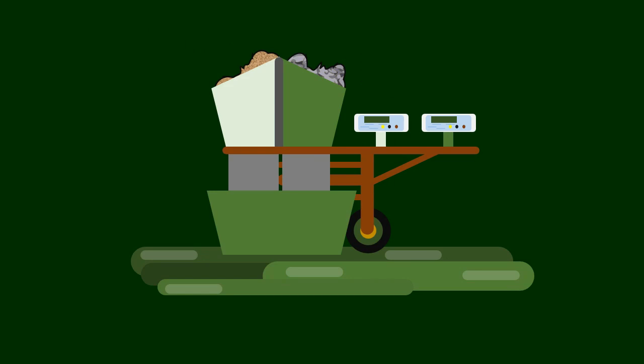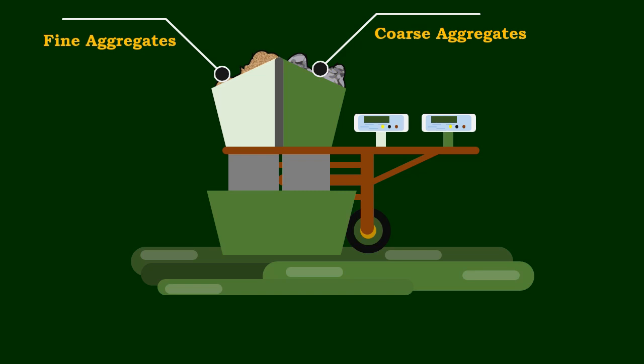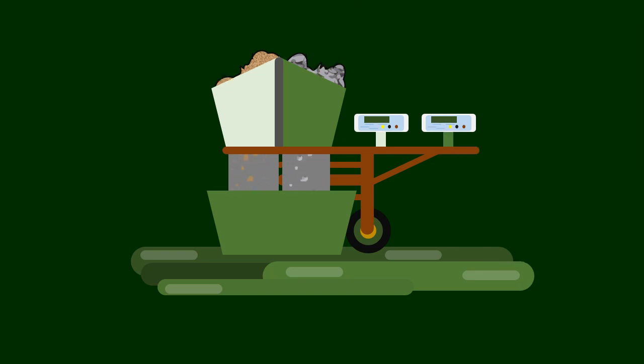For large size works, way batchers are used which consist of two hoppers loaded with fine and coarse aggregates. When required, the weights are preset based on the number of cement bags. The hopper delivers the required weight of materials by gravity to the underlying pan.